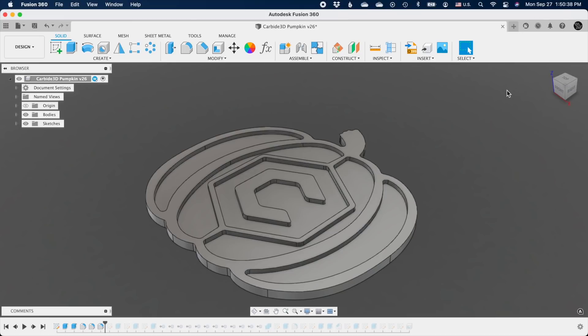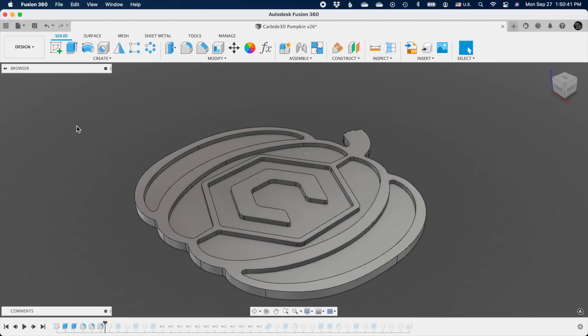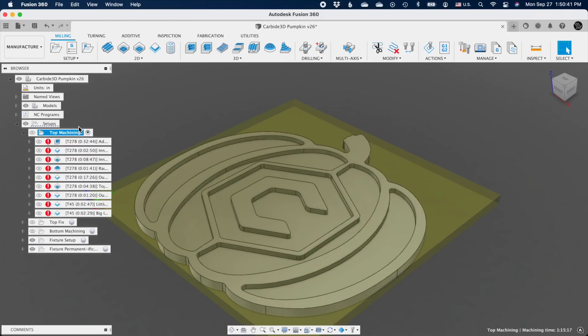Speaking of toolpaths, here's how this is going to go down. Because I'm using plate stock that I'm going to clamp in the corners, I don't want to cut out the whole pumpkin shape until the very end, so I'm going to machine as many of the internal features as possible before separating my pumpkin from the rest of the stock.